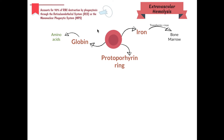The iron in the RBC gets picked up by transferrin and travels to the bone marrow, where it is used and recycled to make new hemoglobins.